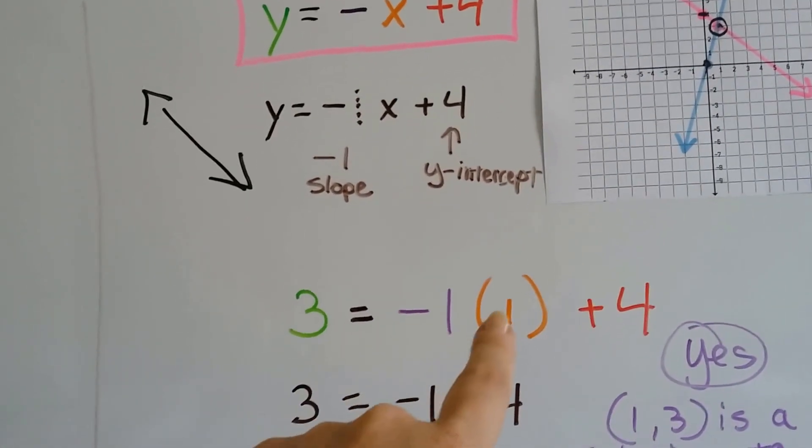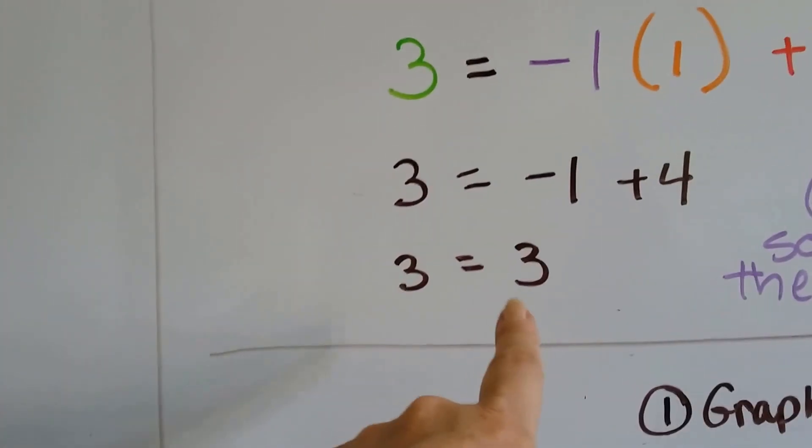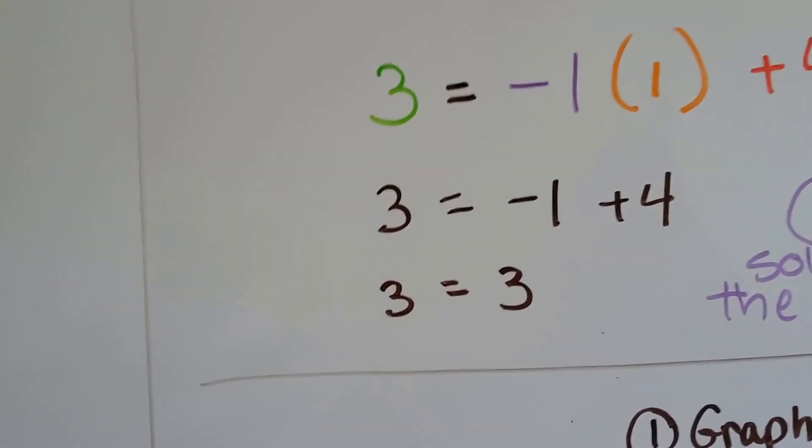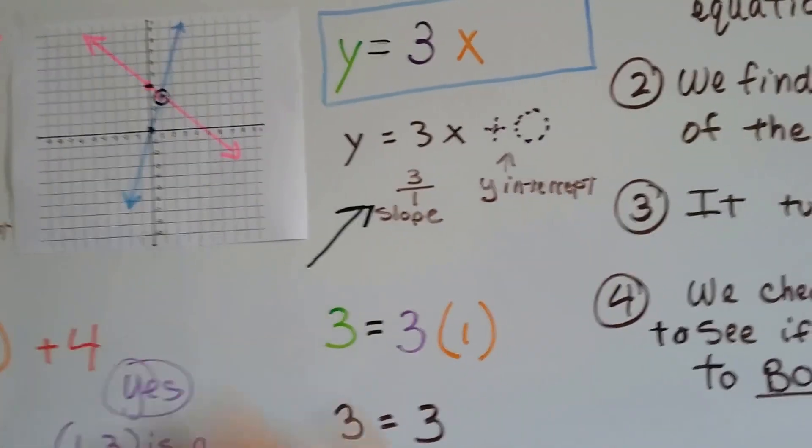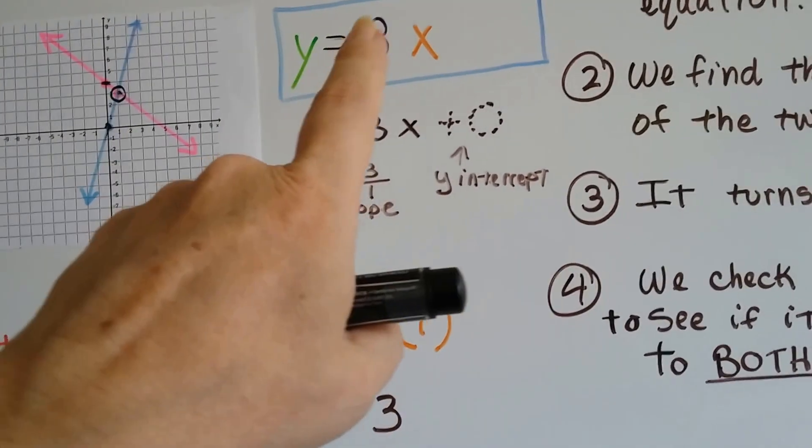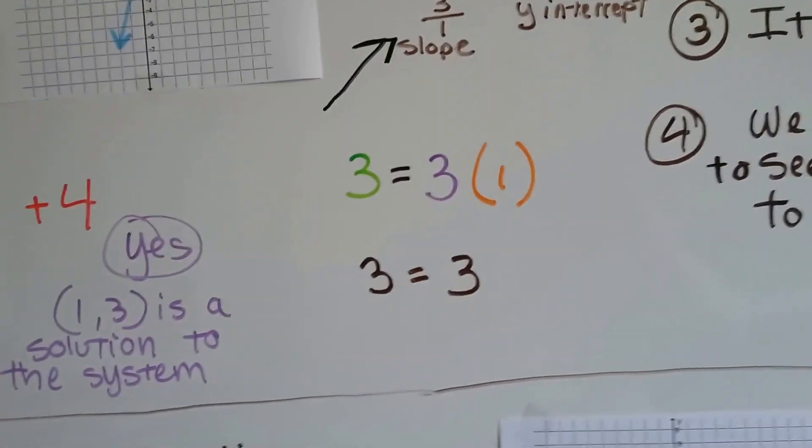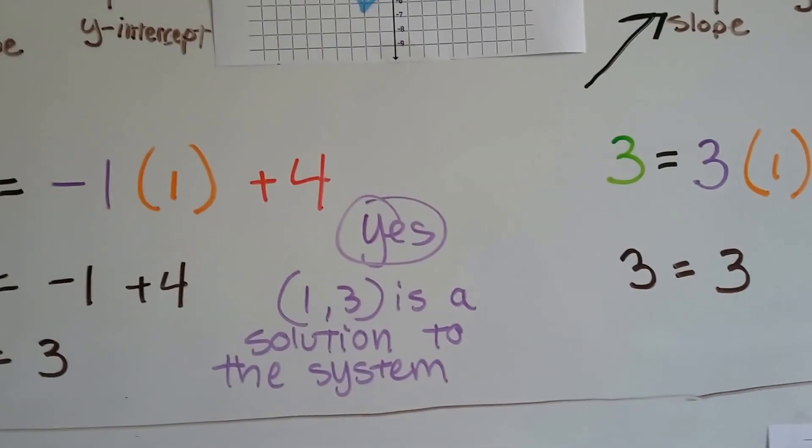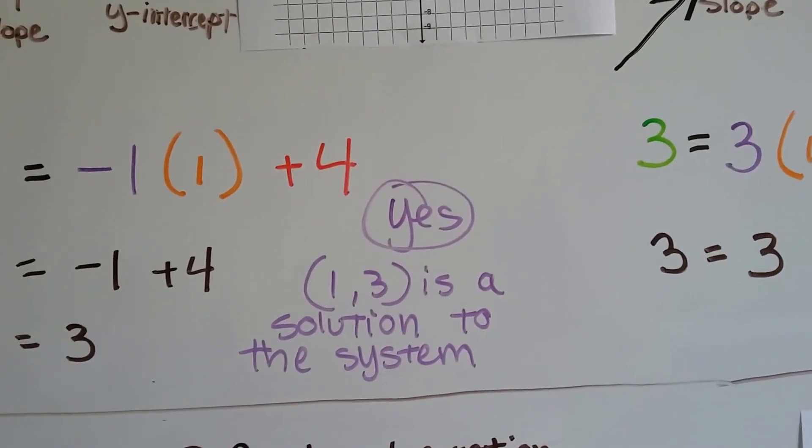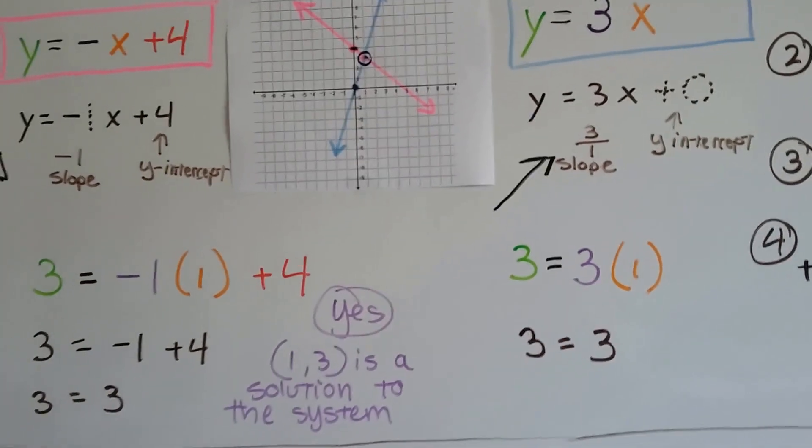We've got negative 1 times 1. Well, negative 1 times 1 is negative 1. I'm going to add the 4. Negative 1 plus 4 is 3. Look, 3 equals 3, so yeah, it's a solution for that one. Now let's try it for this one. We don't need to write that plus 0. We just needed that for when we were graphing. We can just plug it in as 1 and 3. 3 equals 3 times 1. Yep, it sure does. So yes, 1, 3, X1 and Y3 is a solution to the system. That ordered pair is a solution to the system of equations.